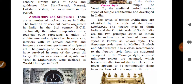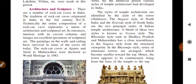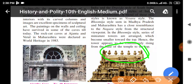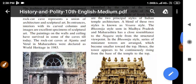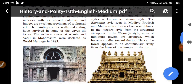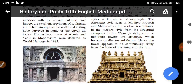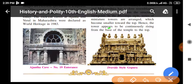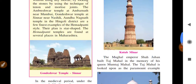Styles of temple architecture are identified by the style of the tower (shikhara). The Nagara style of North India and the Dravida style of South India are the two principal styles of Indian temple architecture. The Bhumija style, found in Madhya Pradesh and Maharashtra, closely resembles the Nagara style and features miniature towers arranged in lines from base to top — smaller towers arranged at the top, visible from base to horizon.